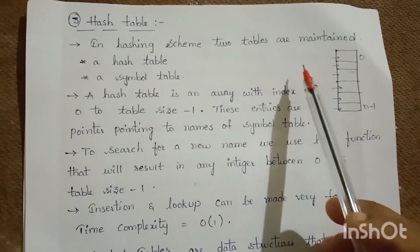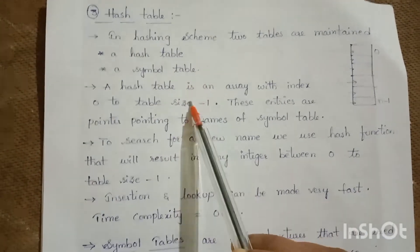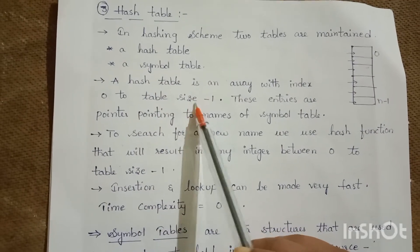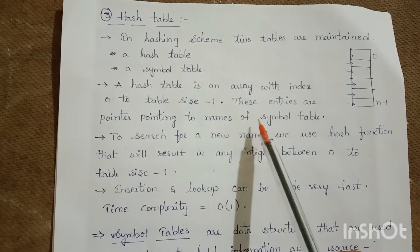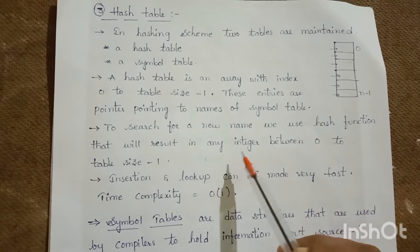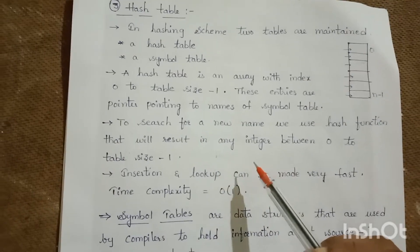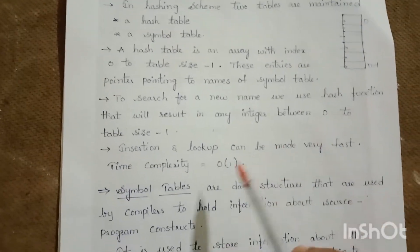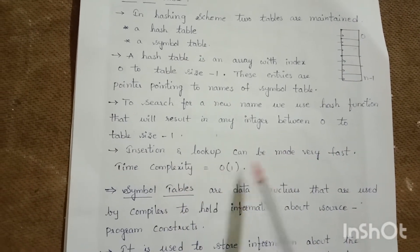In a hashing scheme, two tables are maintained: a hash table and a symbol table. The hash table is an array with indices 0 to hash_table_size minus 1, where entries are pointers pointing to names in the symbol table. To search for a name, a hash function is used that results in an integer between 0 and table_size minus 1. Insertion and lookup can be made very fast with a time complexity of O(1).